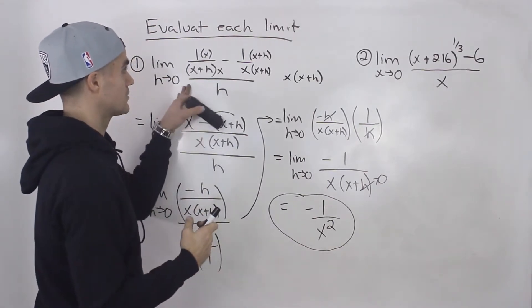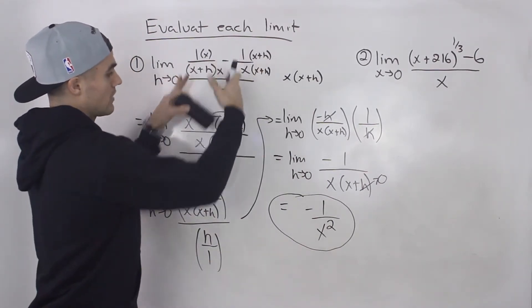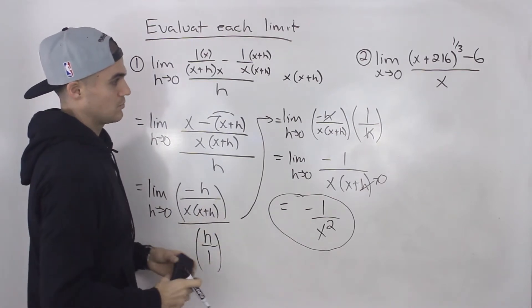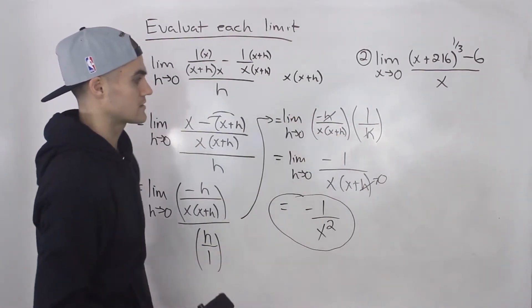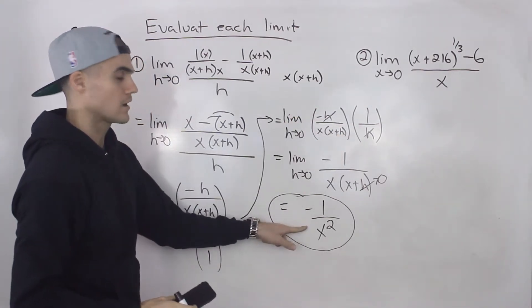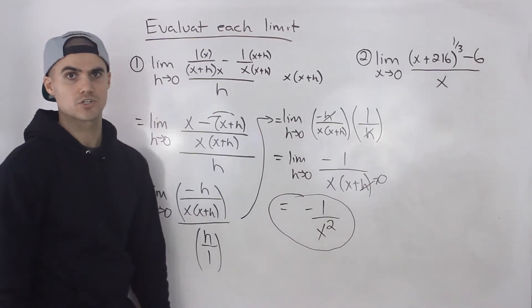So again, whenever you see something like that, make the numerator into one fraction. And then you should get to the point where the h's will cancel out, and you end up with some sort of expression. And then finally, the second limit.